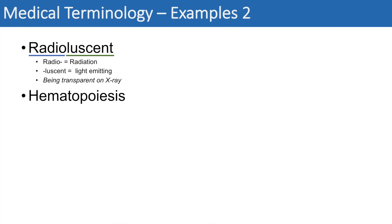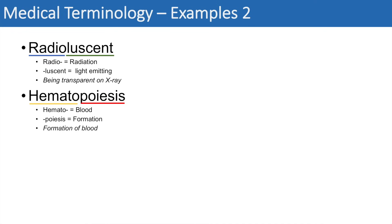The next practice word is hematopoiesis. Break it down: hemato — we might think of words like hematologist — means blood. And the suffix -poiesis means formation. So hematopoiesis means formation of blood. That's a very easy one.